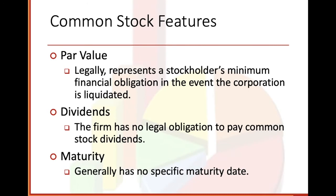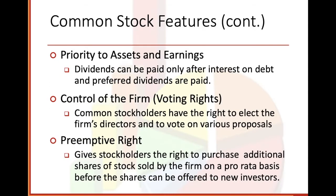Common stock features include par value, which legally represents a stockholder's minimum financial obligation in the event the corporation is liquidated. Dividends: the firm has no legal obligation to pay common stock dividends. Maturity generally has no specific maturity date. Priority to assets and earnings: dividends can be paid only after interest on debt and preferred dividends are paid. Control of the firm — the voting rights: common stockholders have the right to elect the firm's directors and vote on various proposals. That's one difference between preferred stock and common stock. Preemptive right gives stockholders the right to purchase additional shares sold by the firm on a pro rata basis before the shares can be offered to new investors — they get first dibs if new stocks are sold.